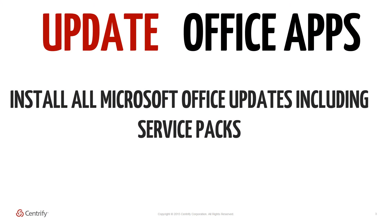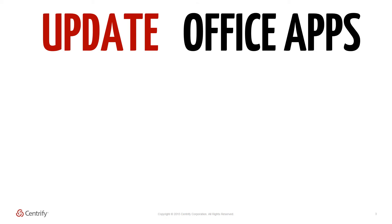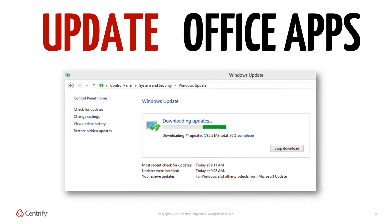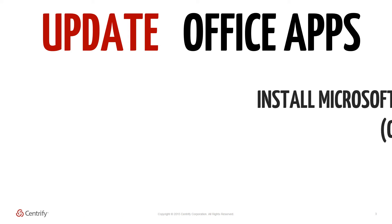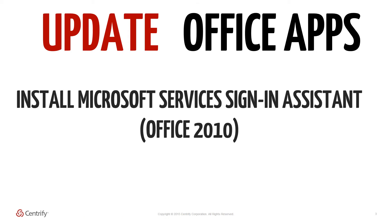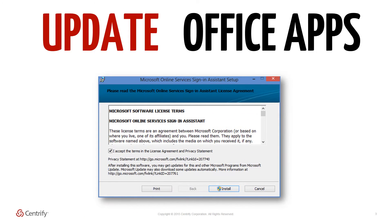The very first thing you must do before all else is to ensure that all updates and service packs are installed via Microsoft Update or similar services such as Windows Server Update Services. For environments with Office 2010 deployed, the Microsoft Services Sign-in Assistant must be installed to enable end-user sign-in capabilities for Office 365. This component is already bundled in with Office 2013 and so does not need to be separately downloaded.